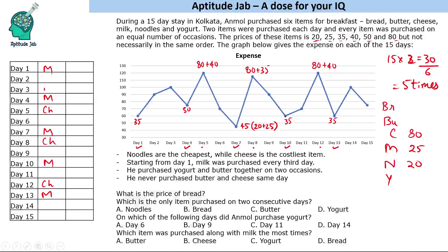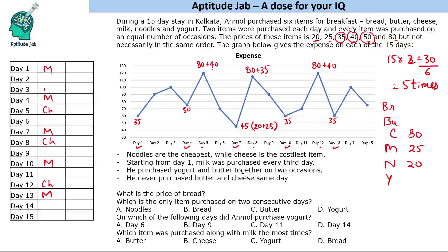He purchased yogurt and butter together on two occasions and never purchased butter and cheese on the same day. Cheese is 80. The remaining values for the other products are 35, 40, and 50. Looking at the three high-value graph points, we see 40 and 35 both appear with 80, but 50 never appears with 80. Since cheese is 80 and we never see 50 plus 80, butter must be 50.